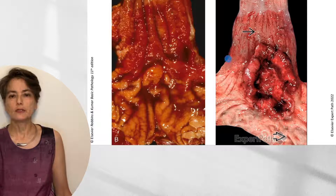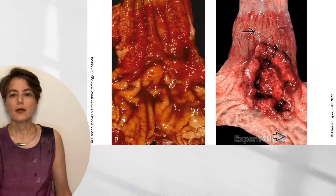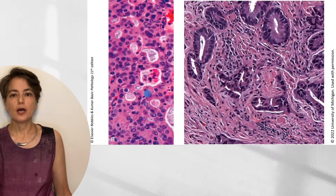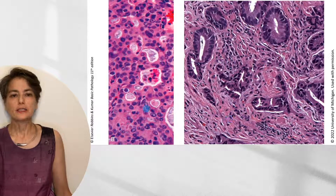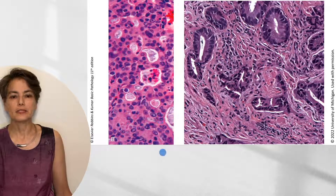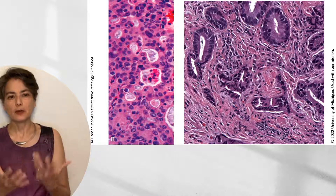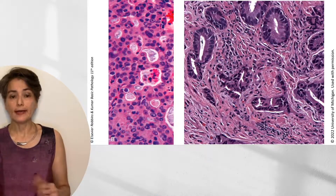The tinctorial differences between specimens reflect one being fixed in formaldehyde versus a fresh resection specimen. Histologically, we see invasive glands, or another appearance where mucin is being formed in back-to-back glands — this image is from the Robbins textbook. That finishes our discussion of adenocarcinoma.